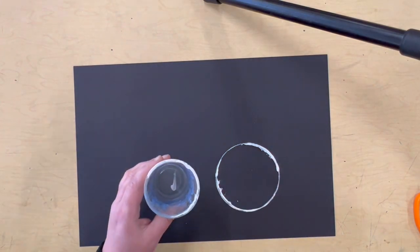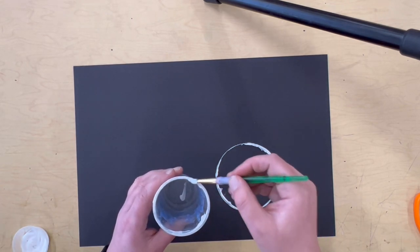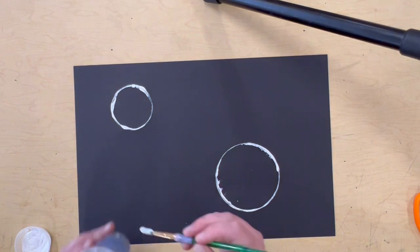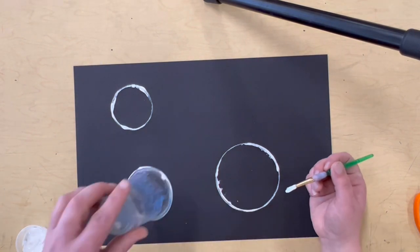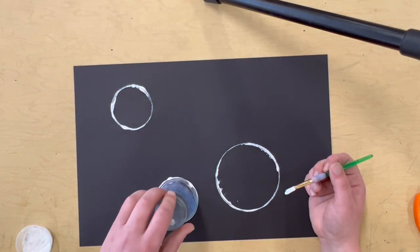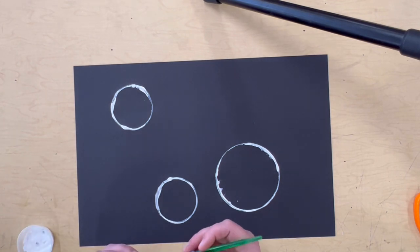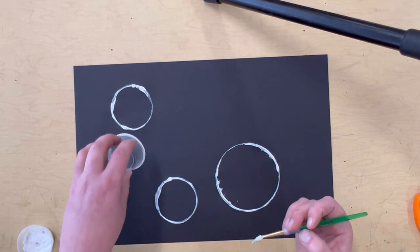After that we're just gonna do the same thing. We're gonna paint the edges of different jars or cups or yogurt containers, whatever you have. I've also used marker caps for smaller bubbles, I've used glue stick caps for smaller bubbles. Pretty much whatever you have with an edge that's a circle will work.